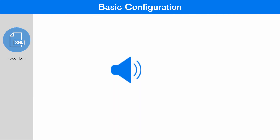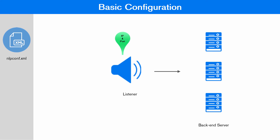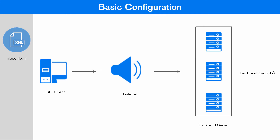LDAP Proxy has various components such as listener, back-end server, and back-end groups. Listener is the IP address and the port number where the proxy listens to the incoming requests. You can have either eDirectory or Active Directory as your back-end server. Multiple back-end servers can be grouped into back-end groups.